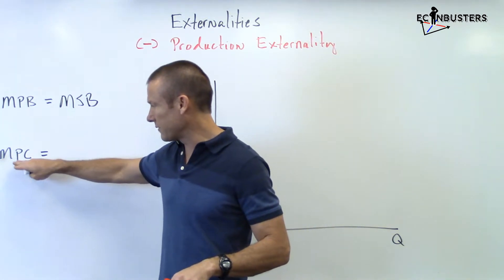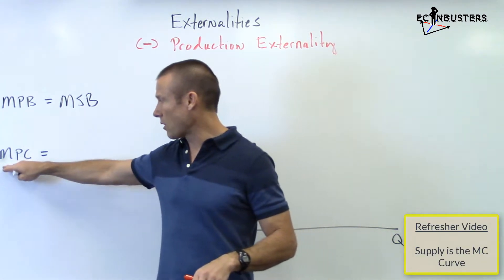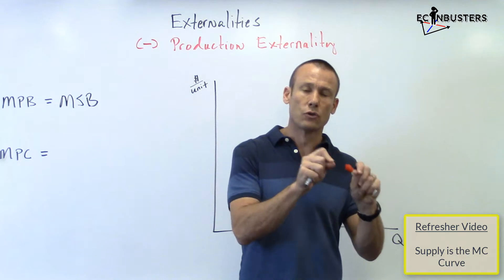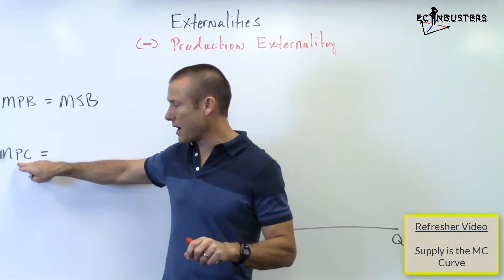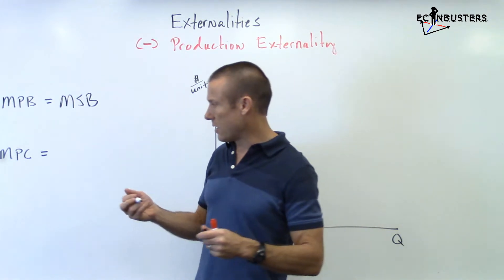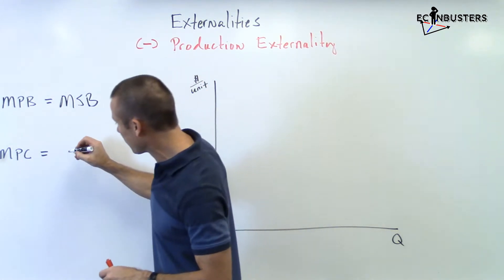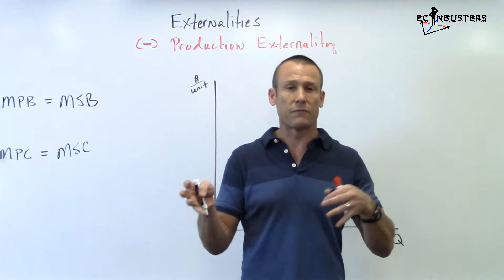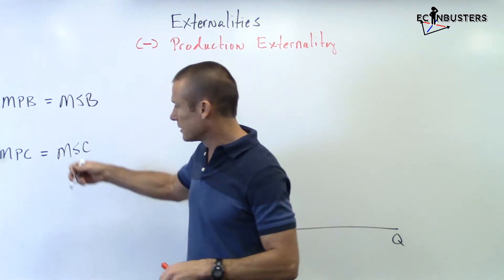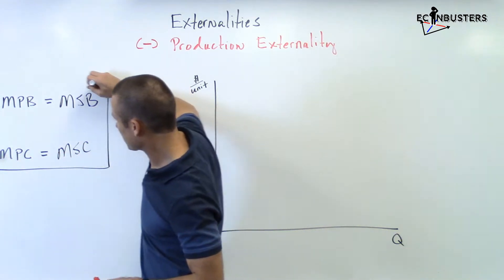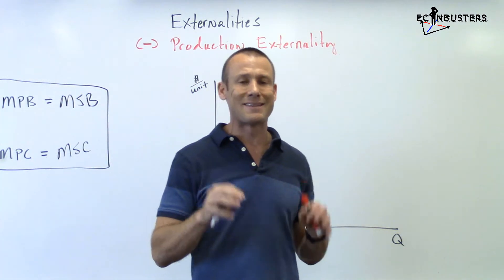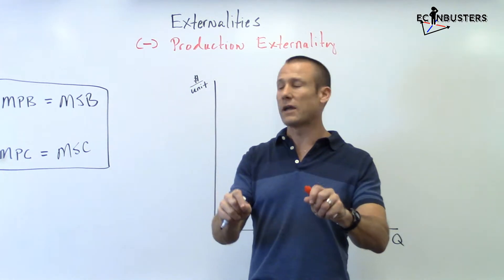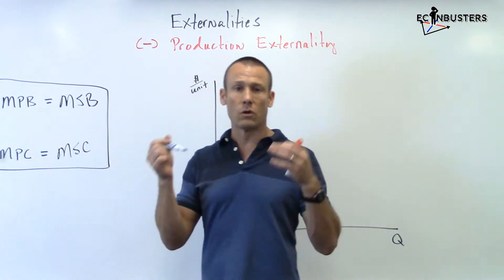Next: marginal private cost, or MPC. We've had marginal cost; now we've got marginal private cost — a little more nuanced. We're emphasizing that this cost is the cost to the producer alone. If marginal private cost equals marginal social cost, that means no third parties are incurring benefits or harms from the production of the good. This equality has been our assumption up until we introduce externalities. Once we get an externality, one of these is not going to be equal.